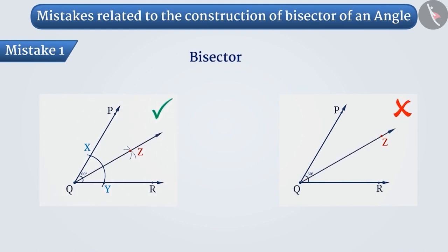They find it difficult to understand how to construct bisectors using compass. Therefore, they try to avoid using this method to find a bisector.